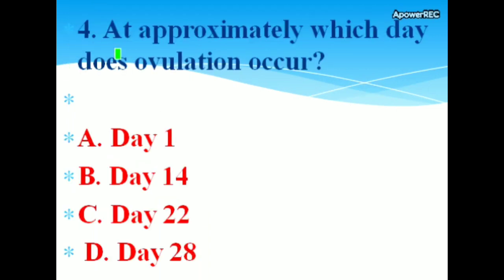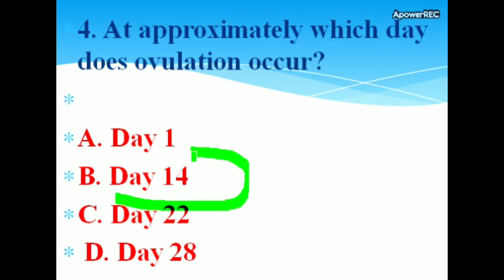At approximately which day does ovulation occur? Options: A. Day 1, B. Day 14, C. Day 22, D. Day 28. The correct answer is Day 14.